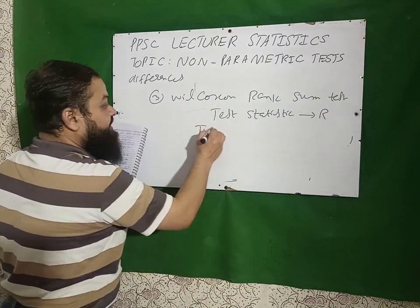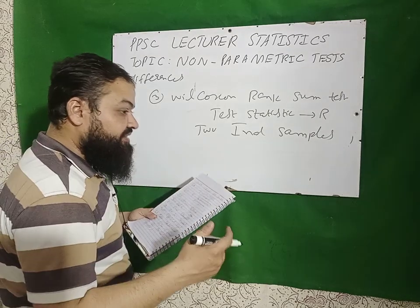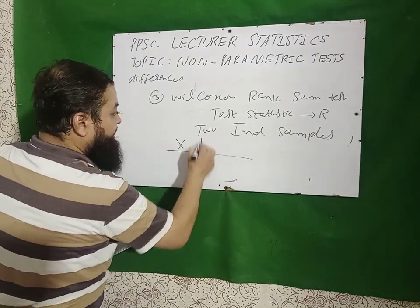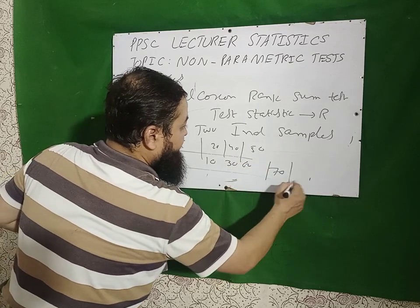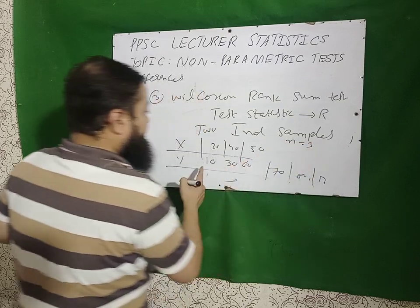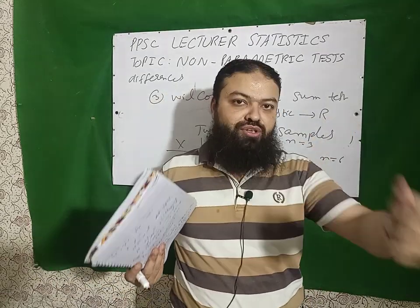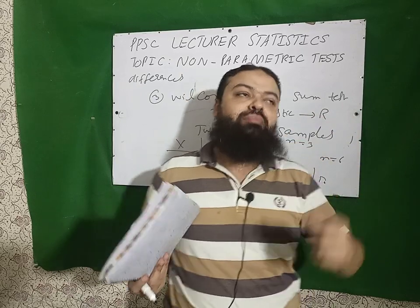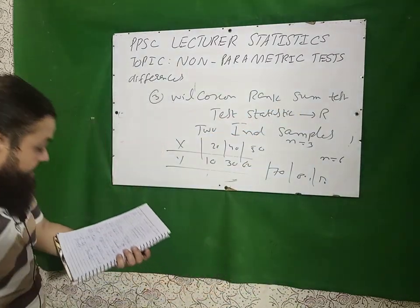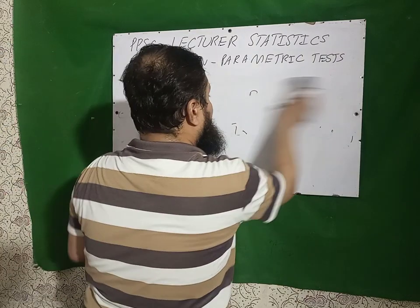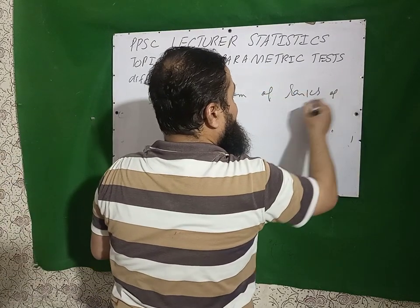The Wilcoxon Rank Sum Test is used for two independent samples, or when the two samples have different sizes. For example, sample X has values 20, 40, 50 (size = 3) and sample Y has values 10, 30, 60, 70, 80, 90 (size = 6). When two samples are independent, from non-normal populations, and have unequal sizes, we use the Wilcoxon Rank Sum Test. The test statistic R is the sum of the ranks of the smaller sample.